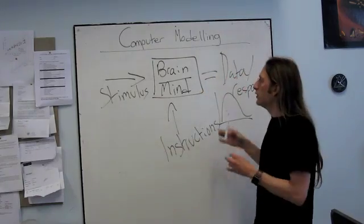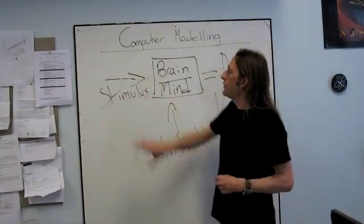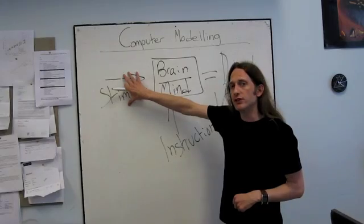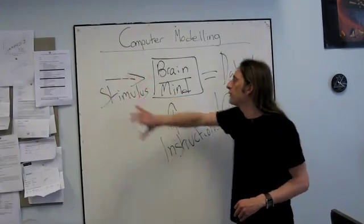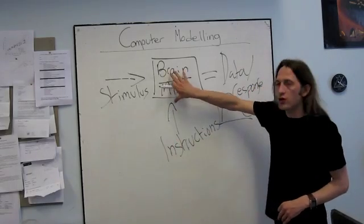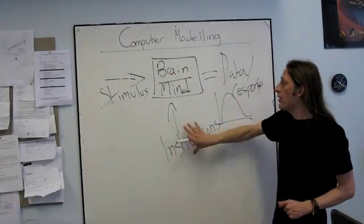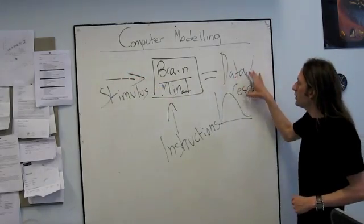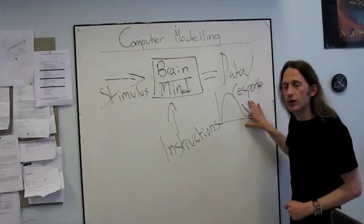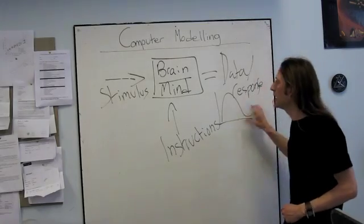Now what we want to do is, because we have control over the stimulus, I know what's going into the system if I've designed the experiment correctly and been careful about what I've used. And I know what instructions I've given my participants, I know what I've asked them to do with this stimulus. And I have a good measure, I have good control over the data I've collected.